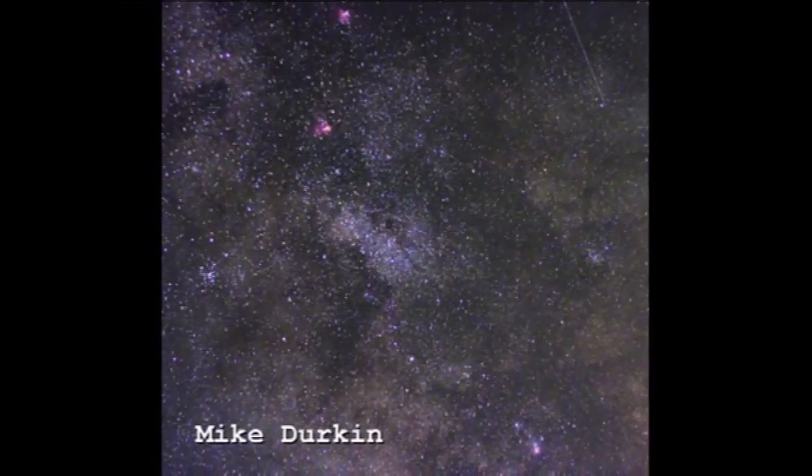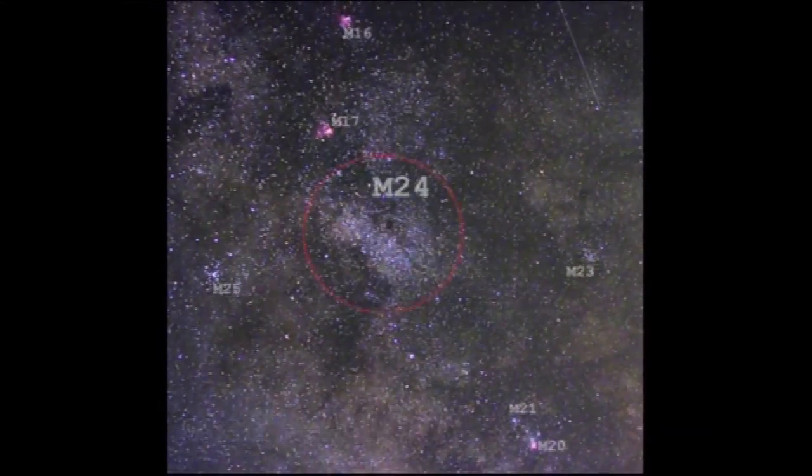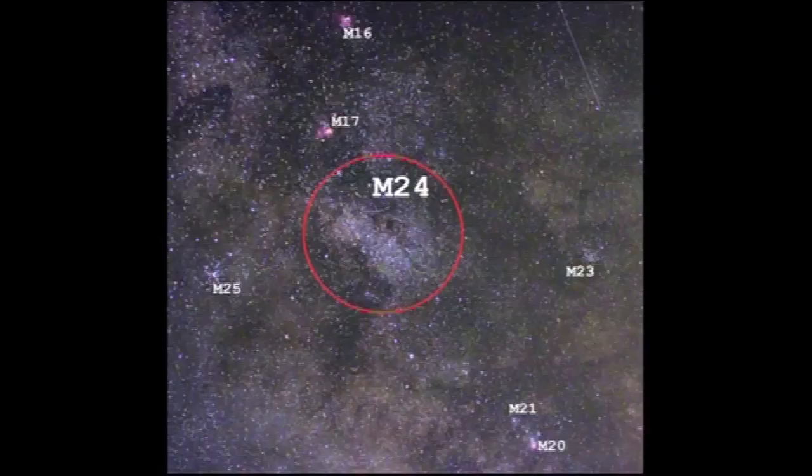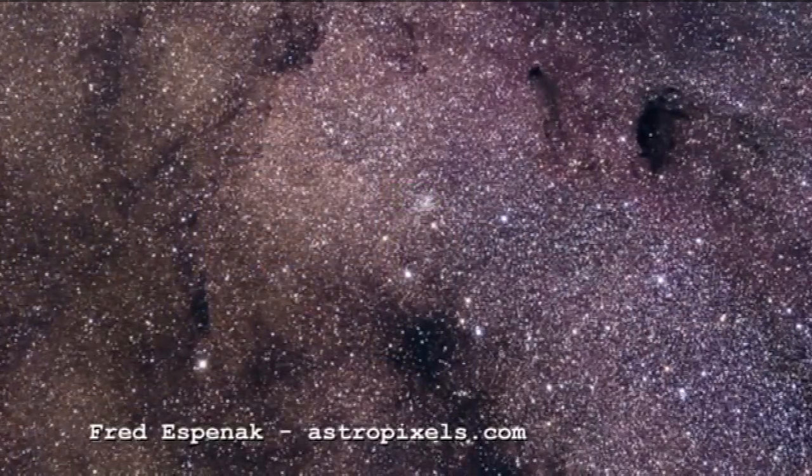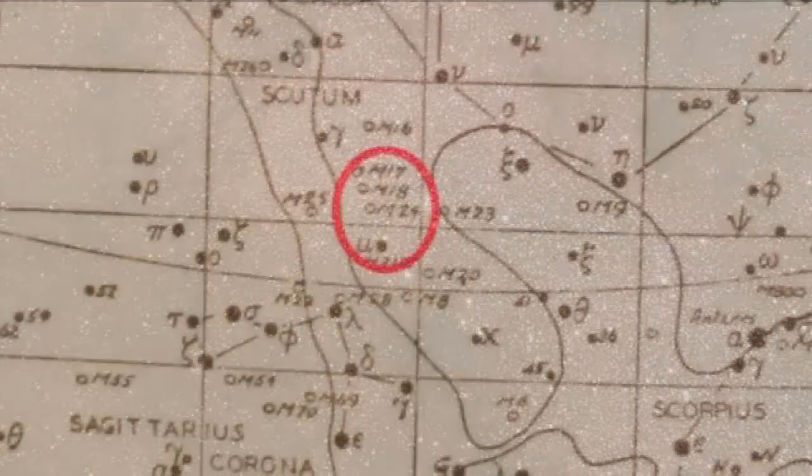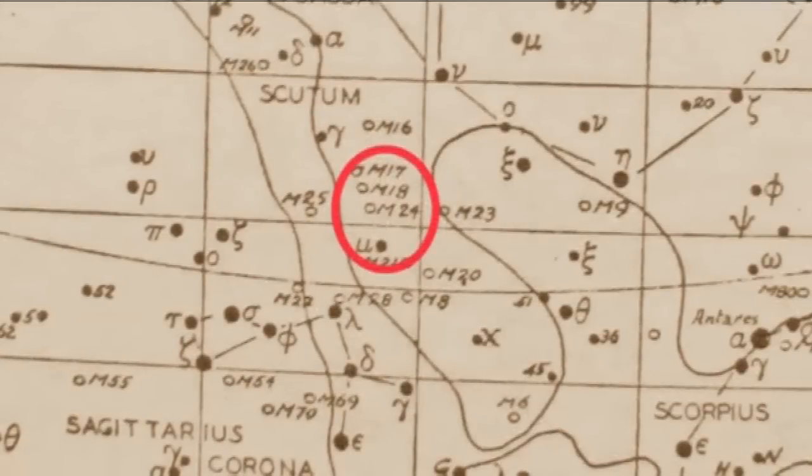M24 is the Sagittarius star cloud, and it's actually one of the biggest items in the Messier catalogue in terms of the amount of sky that it covers. But it's one of these strange items in the Messier catalogue that you can't really call it a Messier object because it's not an object. It's sort of a hole or a tunnel that you're looking down, or a window. Galaxy expert Professor Mike Merrifield is far better at explaining what it's all about.